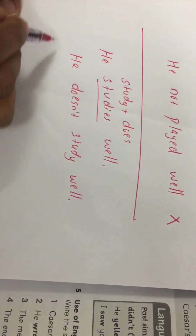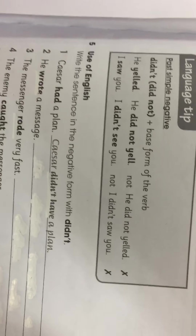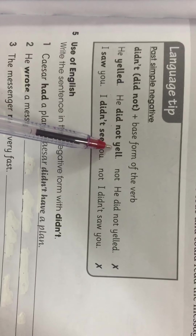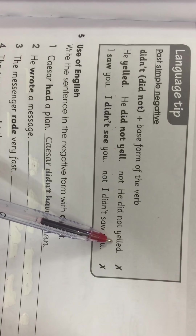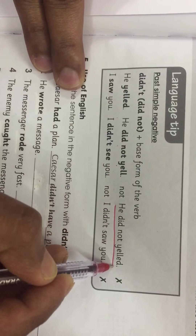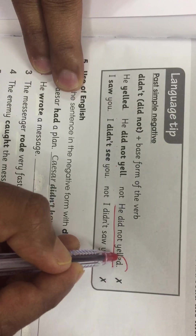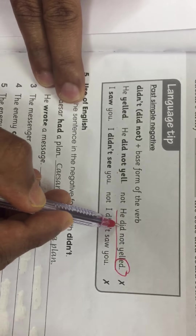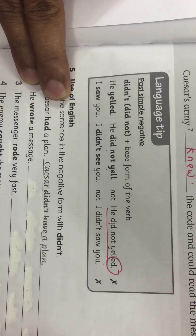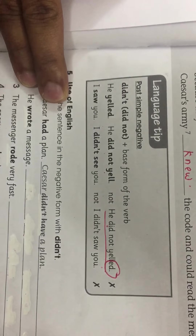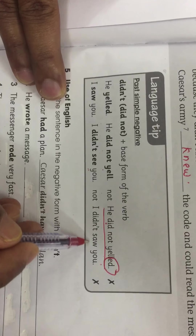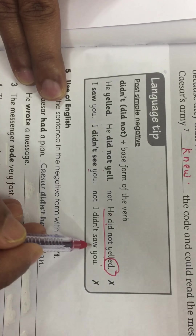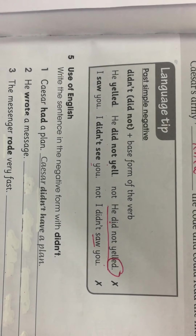There is a common mistake to avoid. In the language tip it says: 'he yelled' → 'he didn't yell.' That is correct. Do not write 'he did not yelled' — if you write that, you are using past tense twice: 'did' is already past, and 'ed' also means past. Similarly, 'I didn't see you' is correct. Do not write 'I didn't saw you' — that is wrong.